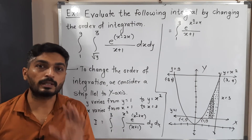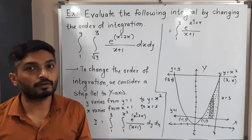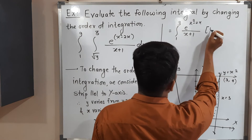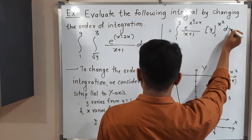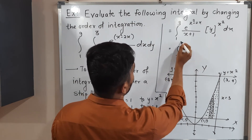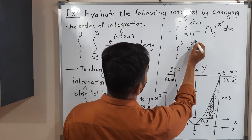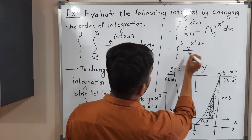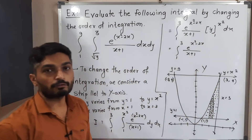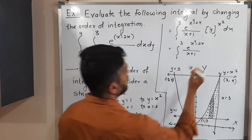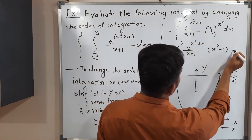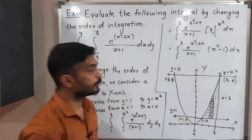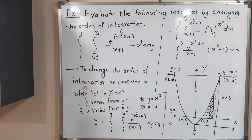Inside the inner integration we simply have dy, and the integration of dy is y. So we write y with limits 1 to x squared, giving integration from one to three of e raised to (x squared minus 2x) divided by (x plus one), multiplied by (x squared minus 1) dx.